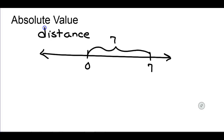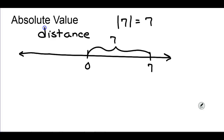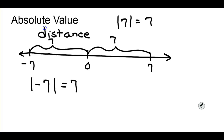Now that doesn't seem too difficult to remember, but if we extend this a little bit — if we have a number out here that's negative seven, the distance from zero to negative seven is still seven. So the absolute value of negative seven is also equal to seven. Since absolute value is about distance, whatever expression or number you have inside the absolute value signs, it will always equal a positive number. It can never equal a negative number.